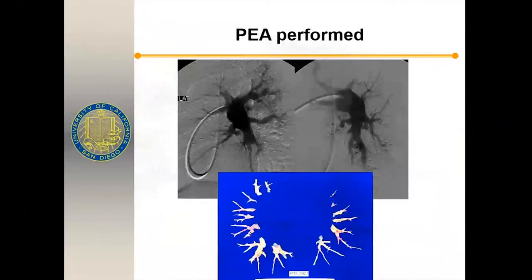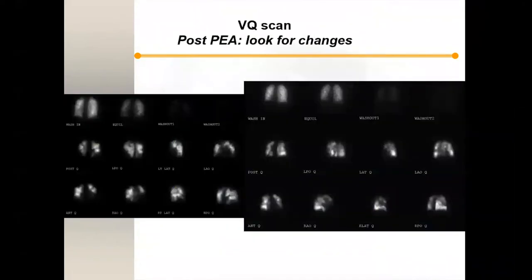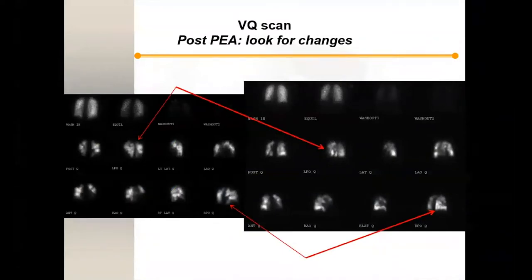This is the angiogram we showed earlier, and this is the specimen removed from the patient — level 3, segmental level disease, with multiple obstructed segments. This is the postoperative VQ scan. Early postoperatively there are many changes, but you can see some defects have resolved — dark areas now bright. There can be some steal phenomena in the early postoperative phase. Typically the VQ scan becomes fairly homogeneous and normal-looking after approximately 3 to 6 months.